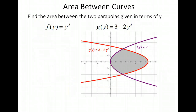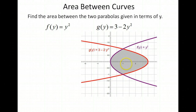Let's try another example. Here we have two parabolas, and the equations are given in terms of y. Now we could integrate in terms of x and change all our equations in terms of x, but that would make it much more complicated, because we would have two separate integrals — one for the left side and one for the right side. So what we're going to do is integrate in terms of y.